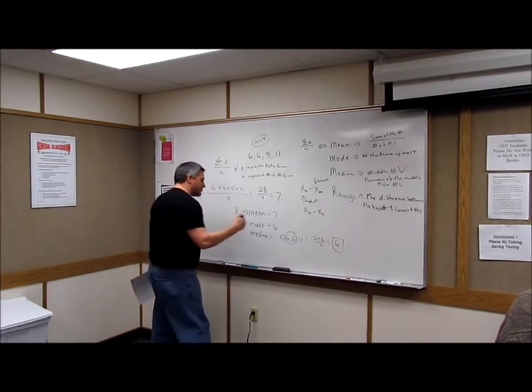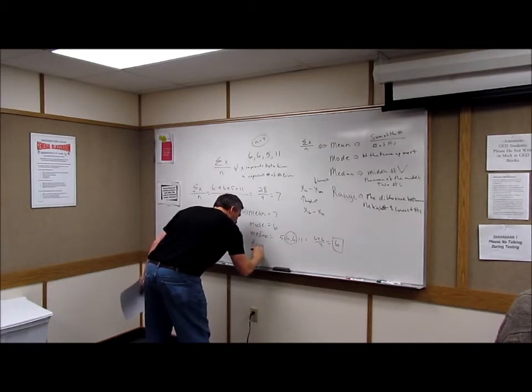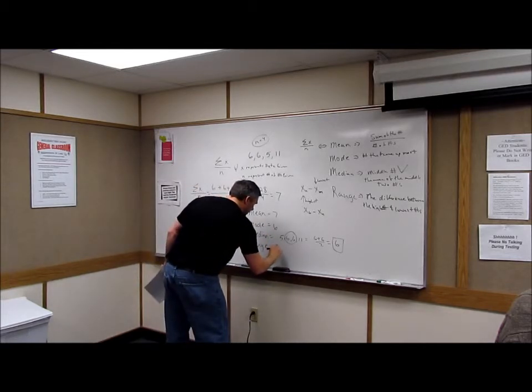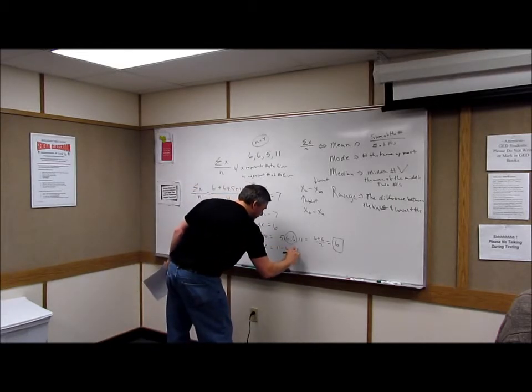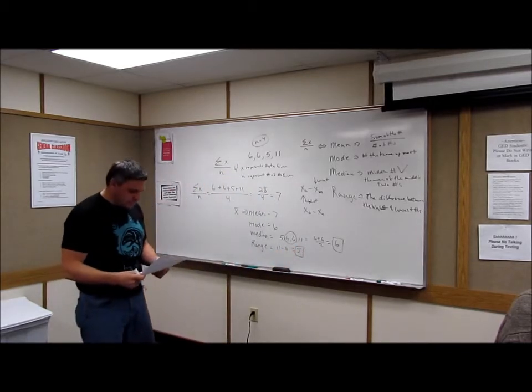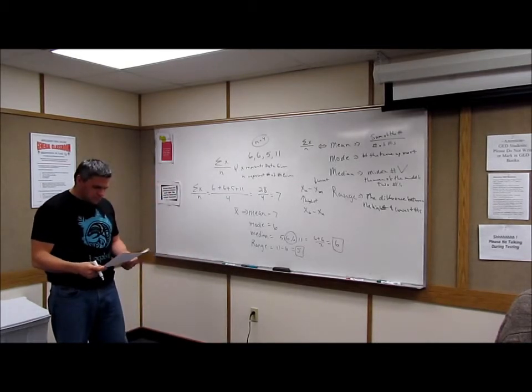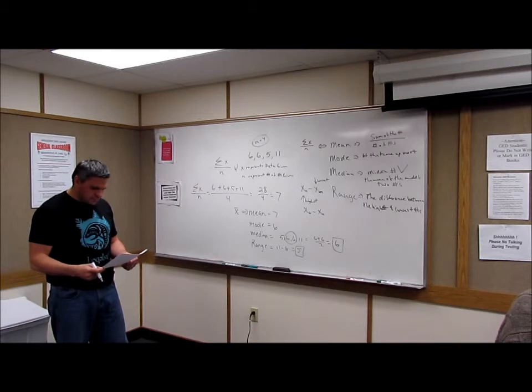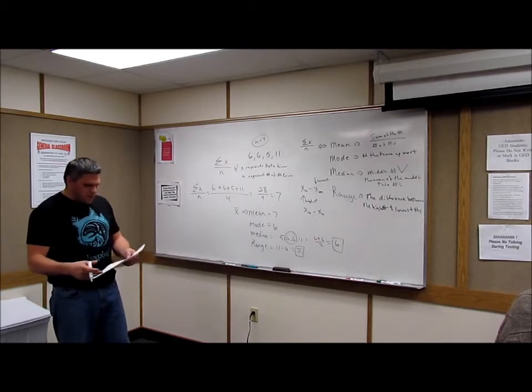So the last one is the range. What's the range? Six. So then what we want to do is we want to see how far apart they are. Six. Eleven minus six is... How could it not be eleven minus five if you're just going through the highest number? Because the lowest number is five.